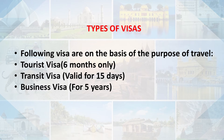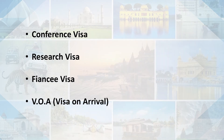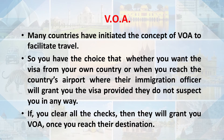There are different types of visas: tourist visa (valid for 6 months), transit visa (valid for 15 days), business visa (valid for 5 years), temporary worker's visa, student visa, journalist visa, working holiday visa, missionary visa, medical visa, conference visa, research visa, fiancé visa, and visa on arrival. Many countries have initiated visa on arrival to facilitate travel, allowing immigration officers to grant the visa upon arrival at the airport.